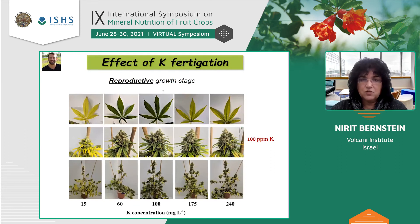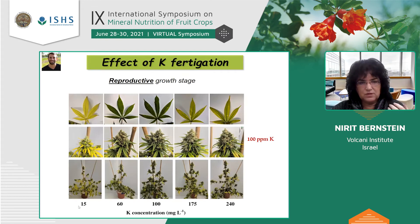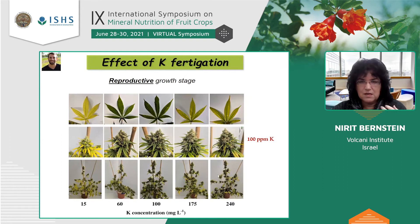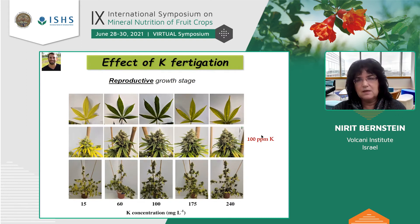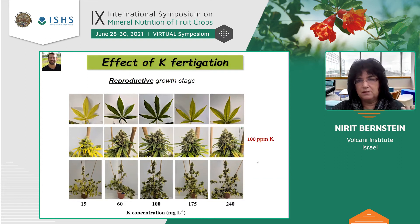What about the reproductive stage for potassium? Checking the same range of concentrations, we found deficiency symptoms at around 15 ppm and also at 60 ppm. Optimal function was at around 175 ppm, and above that — not so much in terms of yield quantity, which looked great — but in terms of plant function there was again a reduction. Our recommended concentration is about 100 ppm in terms of how the plant develops.